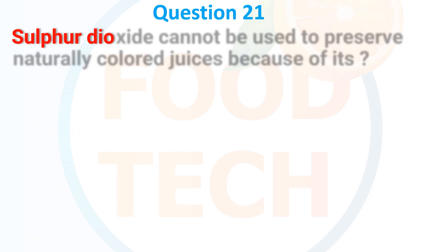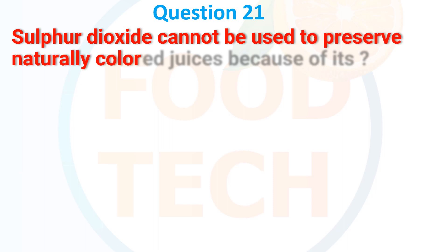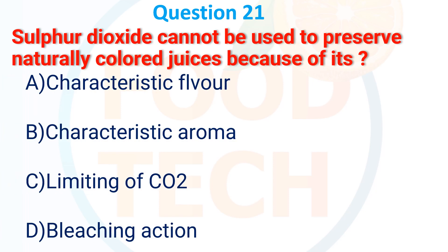Sulfur dioxide cannot be used to preserve natural color juice because of its: A. Characteristic flavor, B. Characteristic aroma, C. Limiting of CO2, D. Bleaching action. The answer is D. Bleaching action.